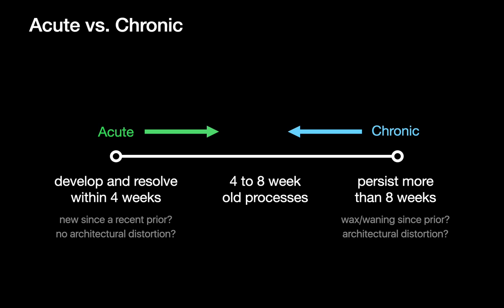When we talk about acute versus chronic, we're talking about things playing out less than or greater than four to eight weeks. Sometimes we'll have prior medical imaging to inform our decisions, and sometimes we won't. We may have to use hints — architectural distortion tends to bias toward a chronic process. This talk focuses on acute non-diffuse consolidation.